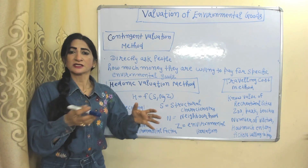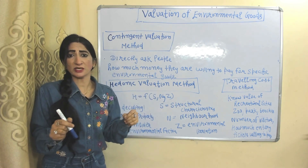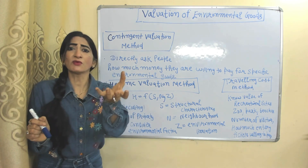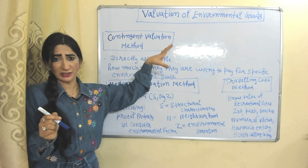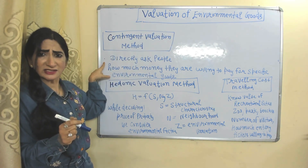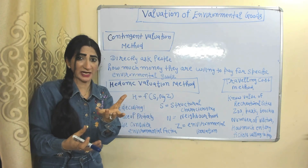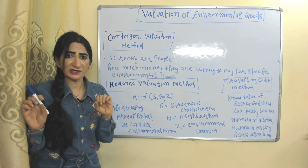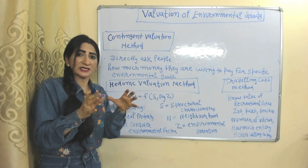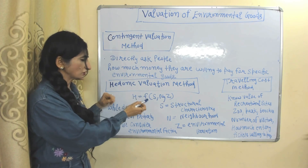Valuation of environmental goods: people think environmental goods are free, that's why they don't value them and misuse them. Valuation of environmental goods means assigning a monetary value to our environmental goods. There are three methods: Under the contingent valuation method, we directly ask people how much money they are willing to pay for a specific type of environmental good. Under the hedonic valuation method, while calculating property price, we also add environmental factors.